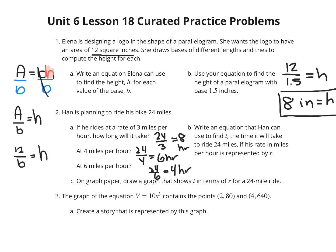Now write an equation that Han can use to find the time, t, to ride 24 miles, if his rate in miles per hour is represented by r. What have we done so far? It looks like we took our distance and divided it by our rate of speed, and that was equaling our time. So we're looking at 24 divided by our rate equals our time: 24/r = t.